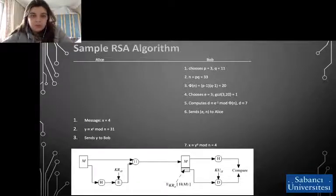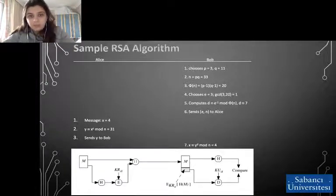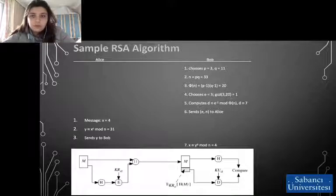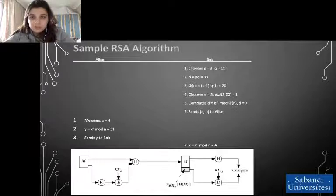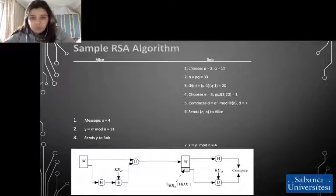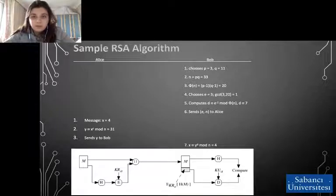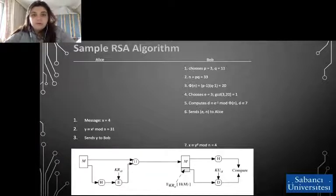Now we know some background about the RSA algorithm. Here is a sample RSA algorithm where Bob and Alice would like to communicate. First, Bob chooses two prime numbers: p = 3 and q = 11. He computes the large value n = p × q = 33. Then he computes φ(n) = (p−1)(q−1) = 20. He chooses a derived value e, which should be greater than 1 and less than (p−1)(q−1), and GCD(e, 20) should equal 1. The numbers e and n form the public key and are made public. Then Bob creates a private key d, computing e^(−1) mod φ(n), which equals 7 in this case.